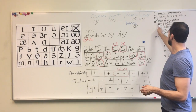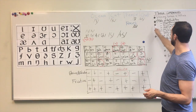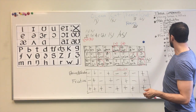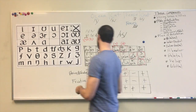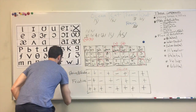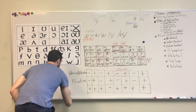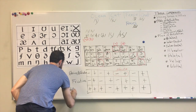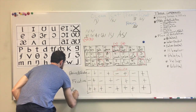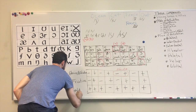They have nasals, liquids, and semi-vowels. And then you have one fricative that's just in the middle of there — the H sound.